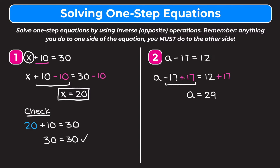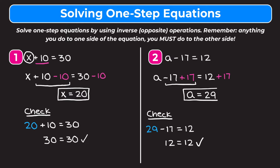To check our work, instead of a minus 17 equals 12 we plug in 29 for a, giving us 29 minus 17 equals 12. 29 minus 17 is indeed 12, so we get 12 equals 12, which is a true statement, confirming that a equals 29 is correct.